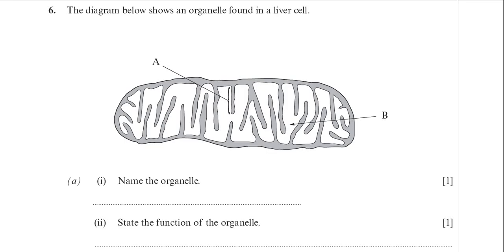This is question 6 from the January 2011 BY-1 paper. It's about organelles, and specifically about an organelle found in the liver. The organelle shown is not just found in the liver though — it's found in pretty much all cells.